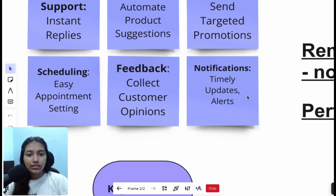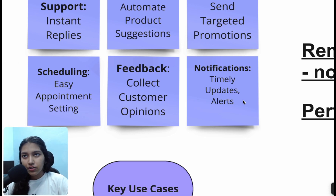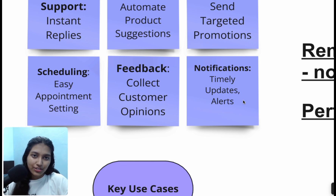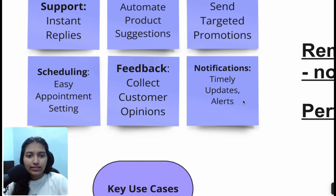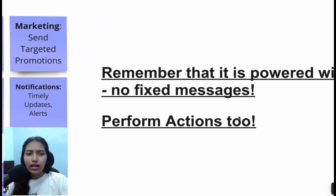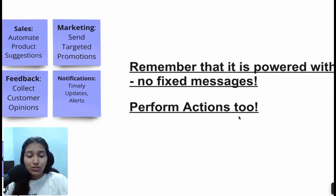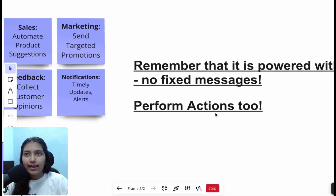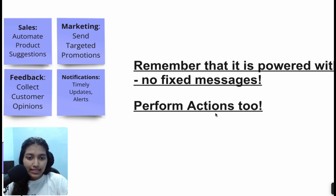Lastly, notifications — timely alerts and updates. If you're a subscription-based model, you could remind customers that their subscription expires in two days, ask if they want to renew, and share the link — all powered by AI with no fixed messages. It can also perform actions like adding to CRM, checking calendars, and checking product databases.